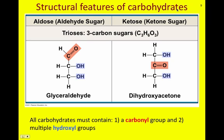Structural features of carbohydrates: what makes a carbohydrate a carbohydrate? As the name may tell you, you need some carbon and some hydrogen. All carbohydrates must contain a carbonyl group. A carbonyl group, shown here in red, is a functional group that has a carbon double bonded to an oxygen atom — represented as C with two lines to the O. All carbohydrates must also contain multiple hydroxyl groups, highlighted here in blue: an O directly bonded to an H. O-H is your hydroxyl group.